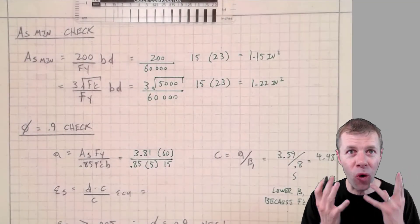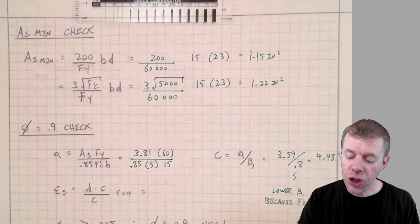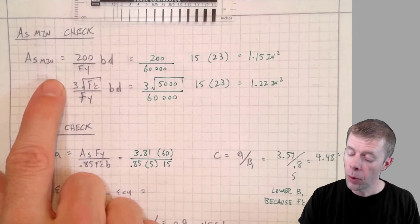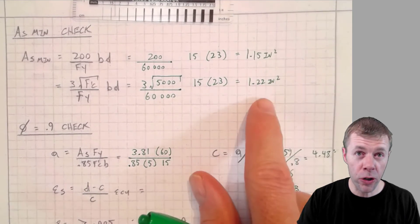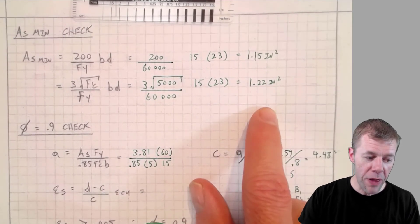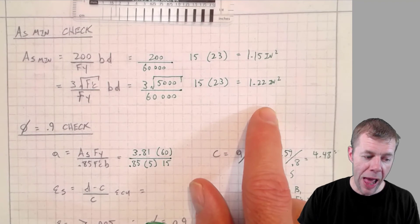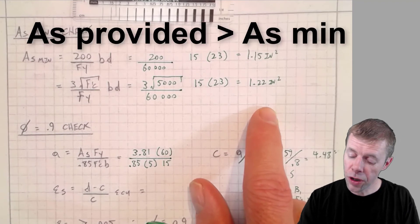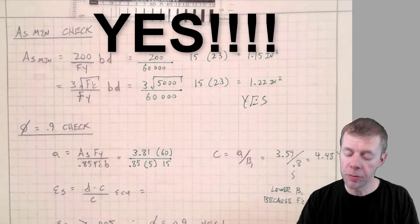Homeward stretch again. We're almost there. Now we've got to check our area of steel, our AS min. We calculated them here, and we would choose the larger of these two, and we compared them to the amount of steel that I ended up providing, and we're good. No problems.